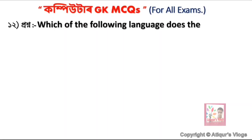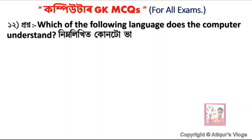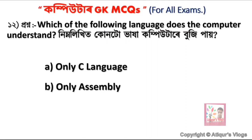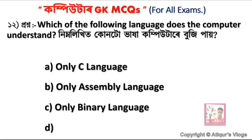Question 12: Which of the following language does the computer understand? Option A is Only C Language, option B is Only Assembly Language, option C is Only Binary Language, and option D is Only Basic. The correct answer is option C — computers understand only Binary Language.